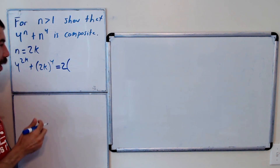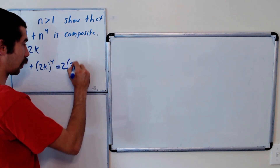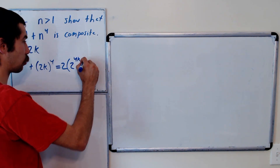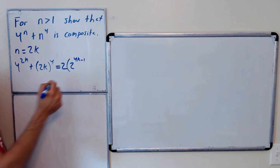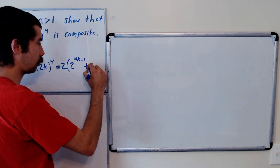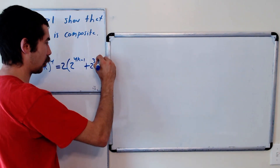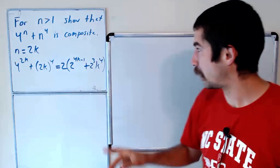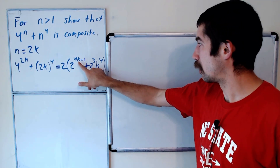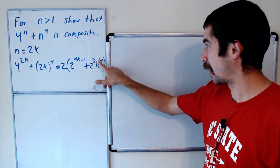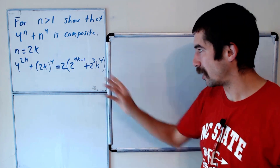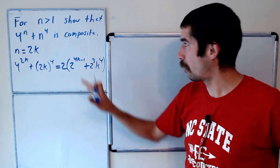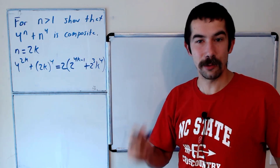4 to the 2k is the same thing as 2 to the 4k, and we factor out 2 times 2 to the 4k minus 1 plus 2 to the 3rd times k to the 4th. We should just be careful that this second factor is an integer greater than 1 — but k is an integer and this is definitely bigger than 1. So if n is even, this question is easy.